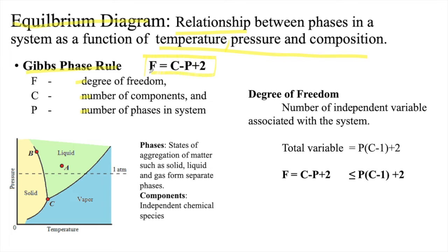equals C minus P plus 2. That is, number of components minus number of phases plus 2. The 2 refers to temperature and pressure.